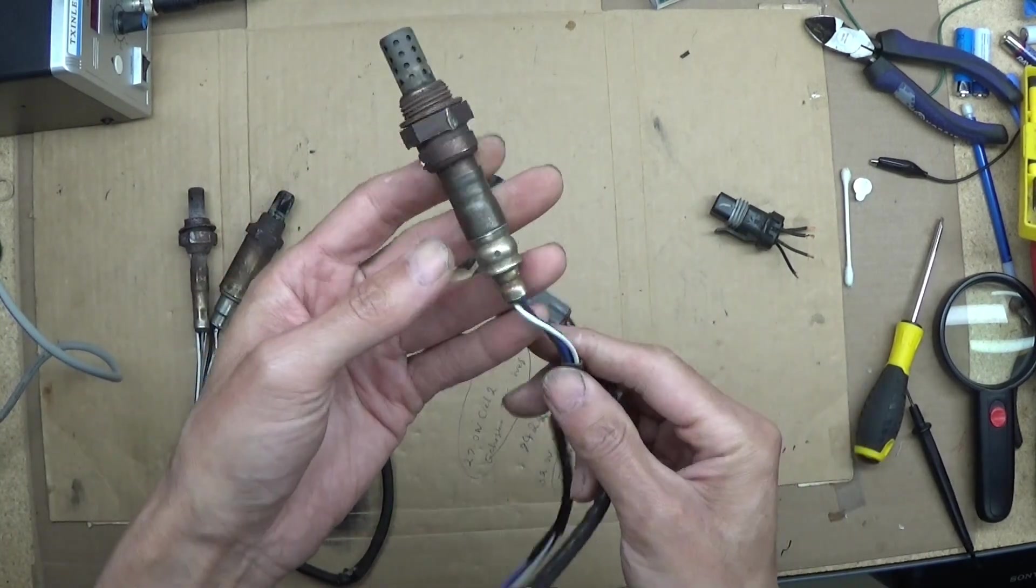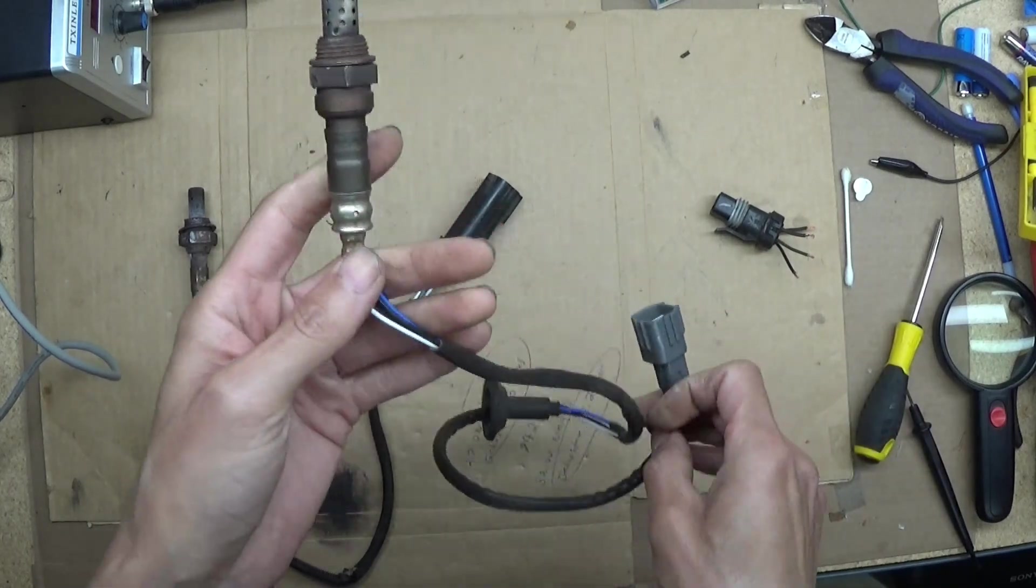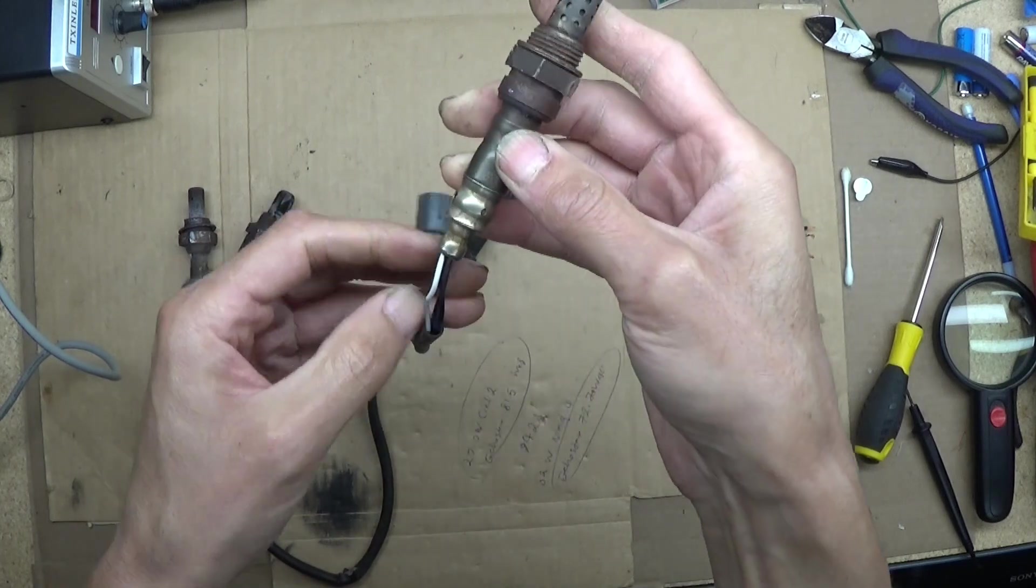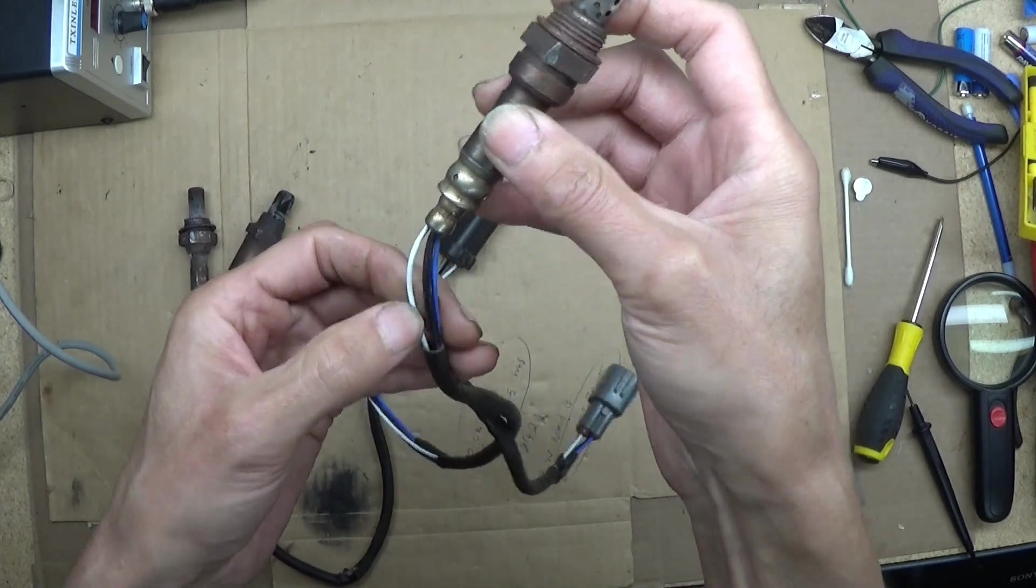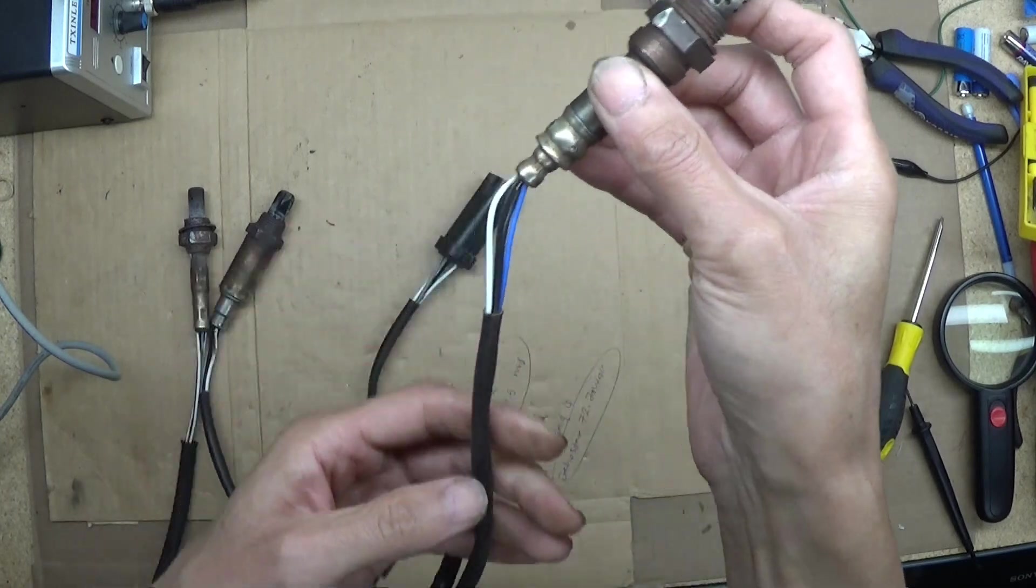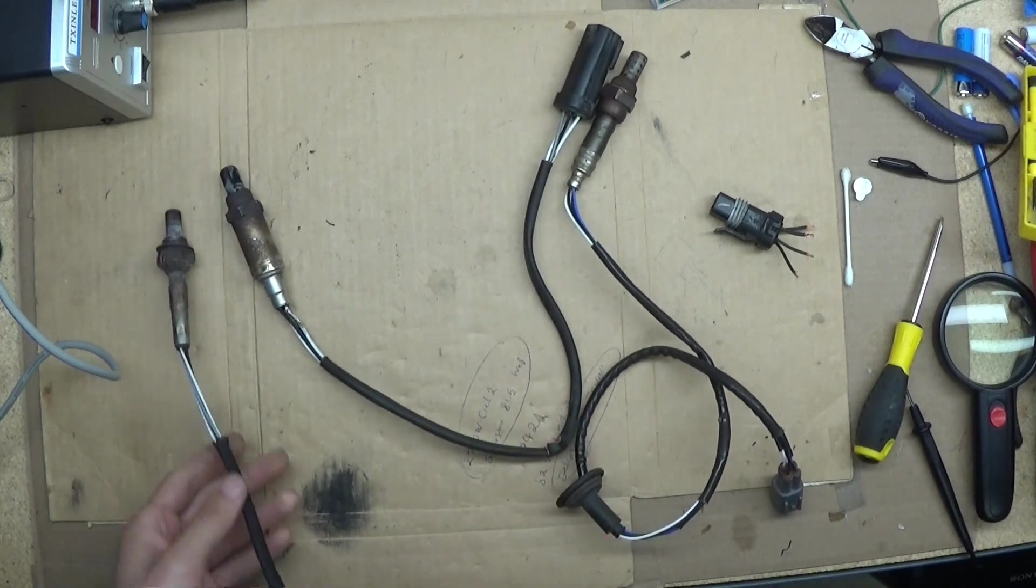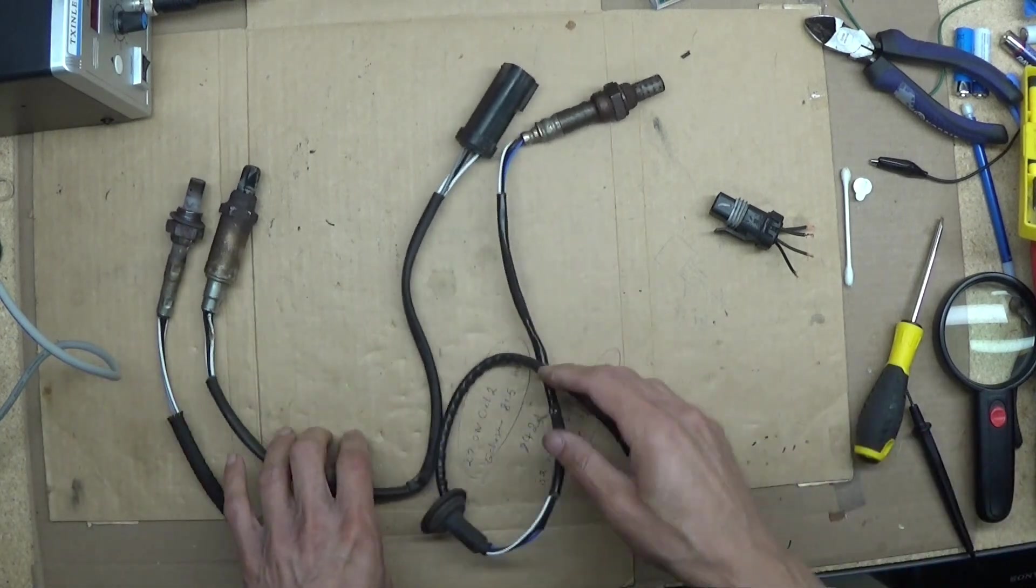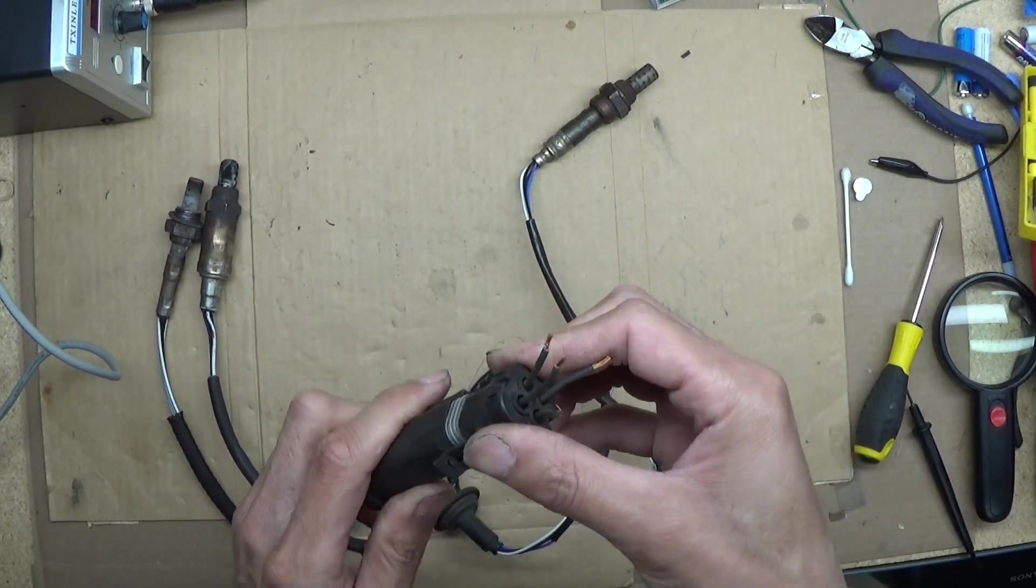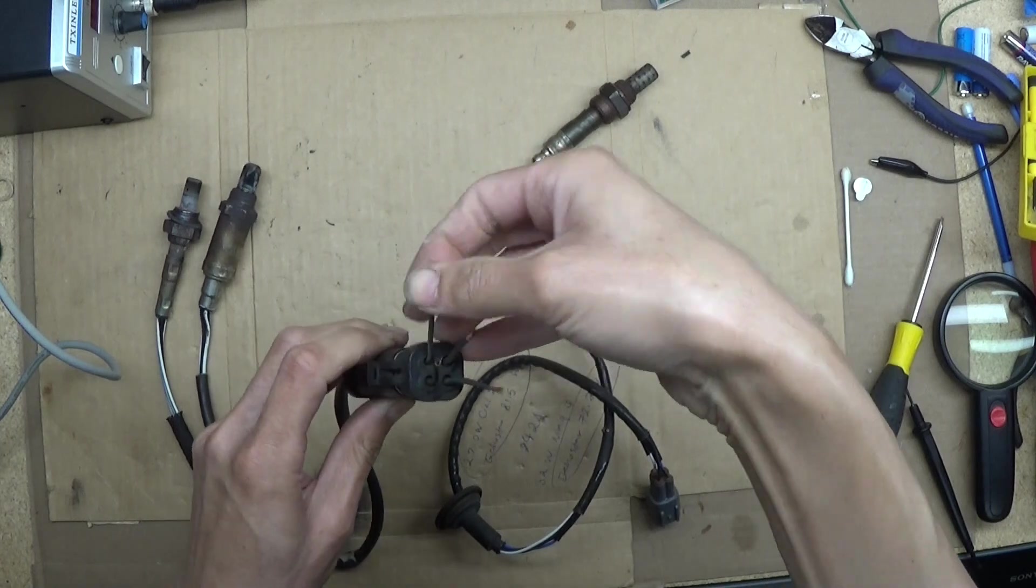This is the Toyota Denso. It's the same. Two wires are heater wires. I think these two black wires are heater wires, and white is the ground and blue is the signal wire. With an ohm meter, we can only measure...